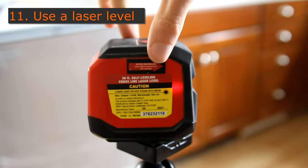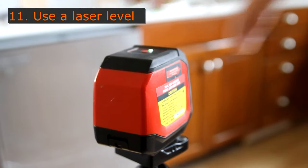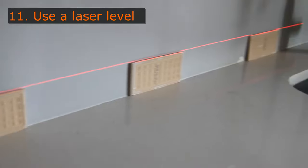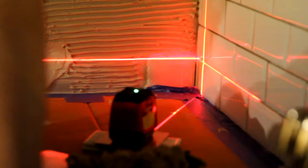Using a laser level will really help you get a nice, crisp, sharp look across your kitchen. Those are especially important when you're in the corners or if you're going over a gap, for example, behind your stove.